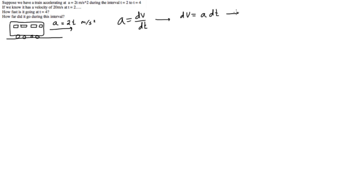So we'll get dv is equal to a dt. We'll continue in this way. Now we do know what a is, so we can write that in. So dv is equal to 2t, that's our a dt. Now we want to integrate this. Maybe let's come down here and write the integration.